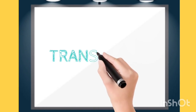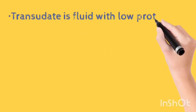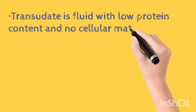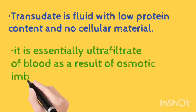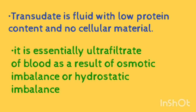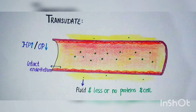Now let us see what are the causes of transudate formation and how transudate is different from exudate. In transudate formation, the cells and proteins do not leak out from the vessels. Transudate is fluid with low protein content and no cellular material — it is basically plasma that has oozed out from blood vessels due to pressure imbalance. In this diagram, transudate formation is shown. The inter-endothelial spaces do not increase and the endothelial cells are not damaged. But somehow fluid leaks out. The major point of transudate is that proteins and cells are not present in it, while in exudate, proteins and cells are present.